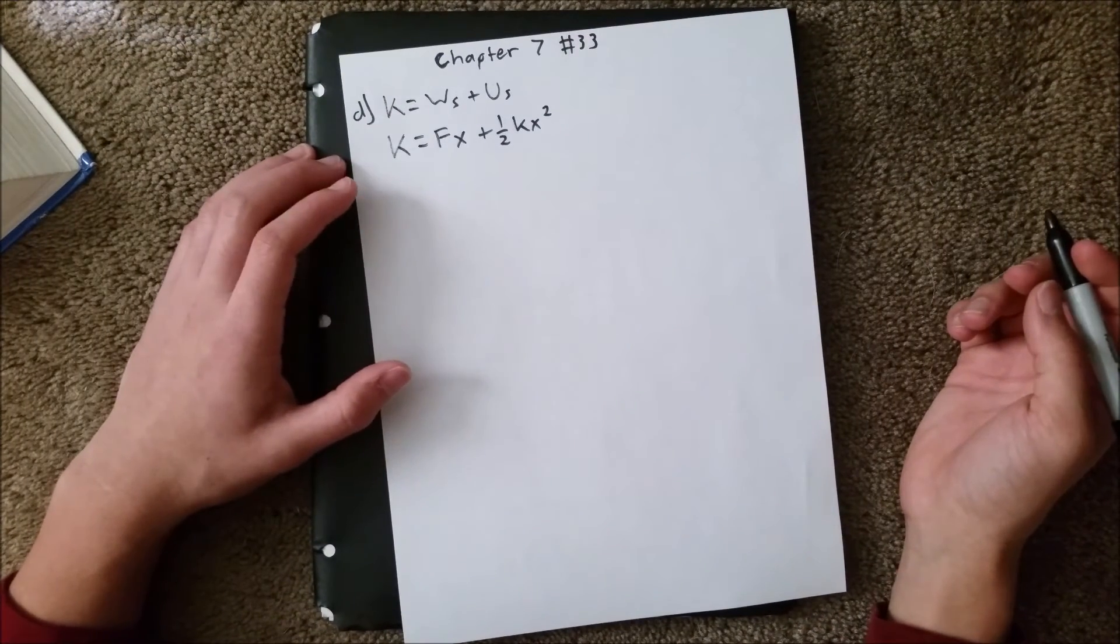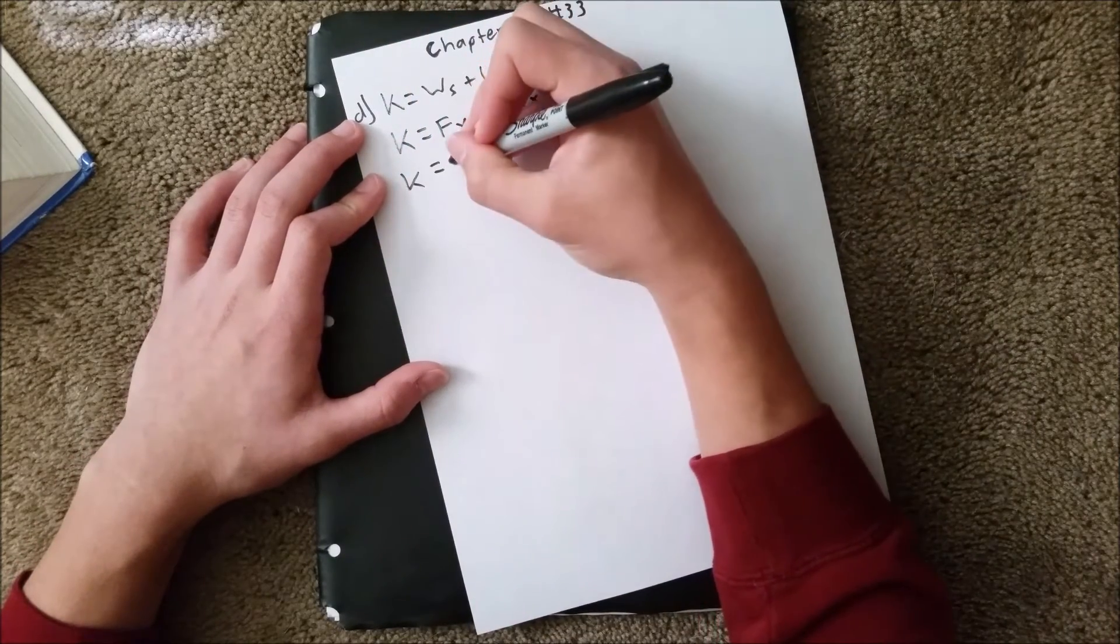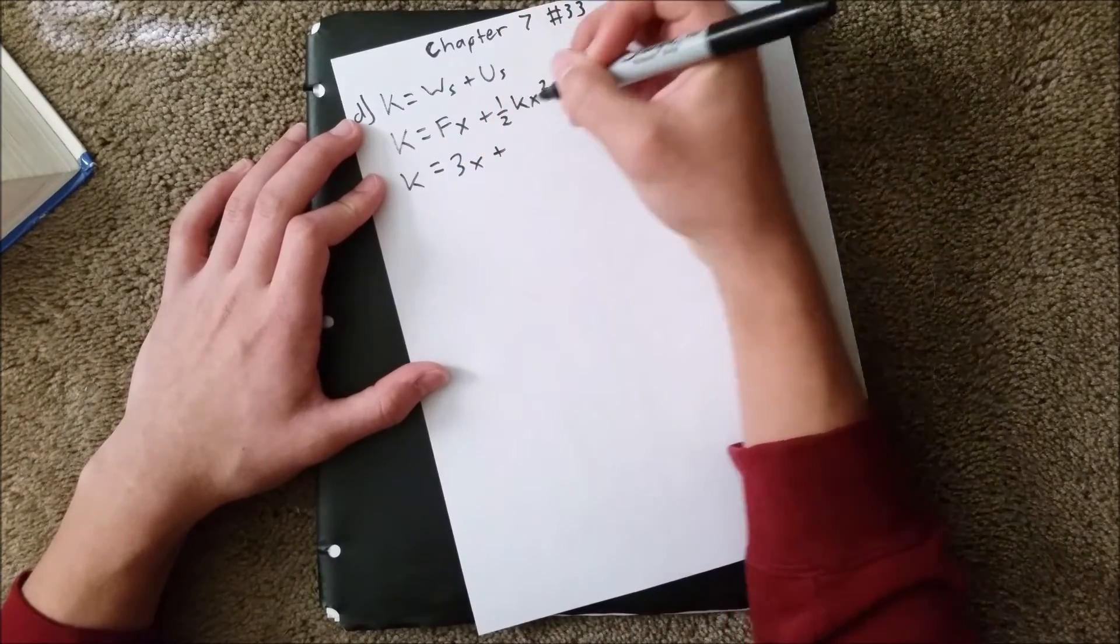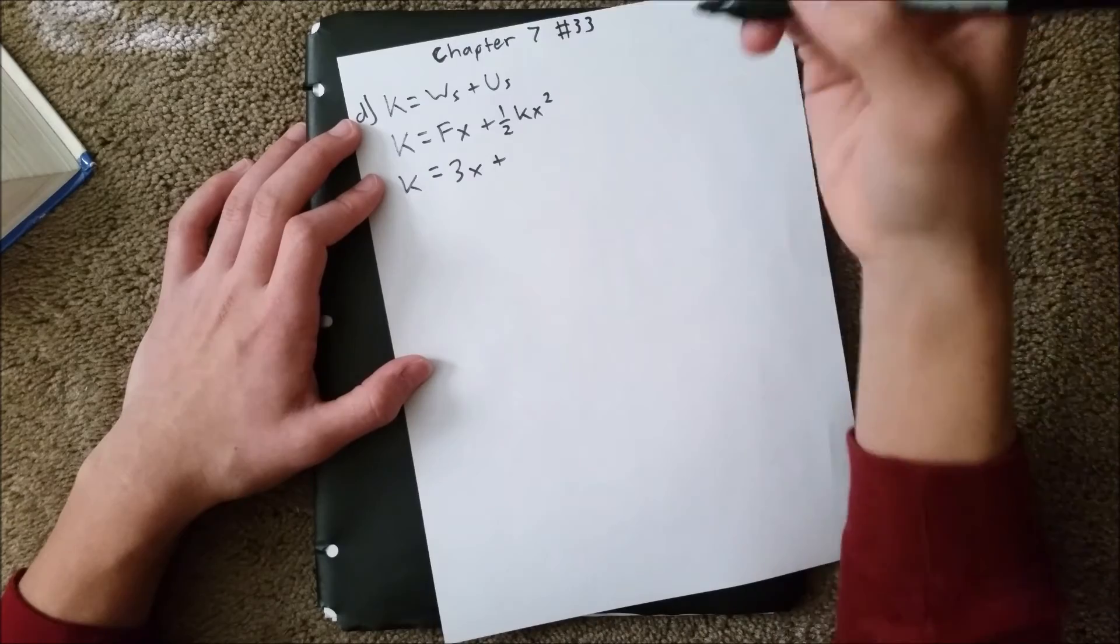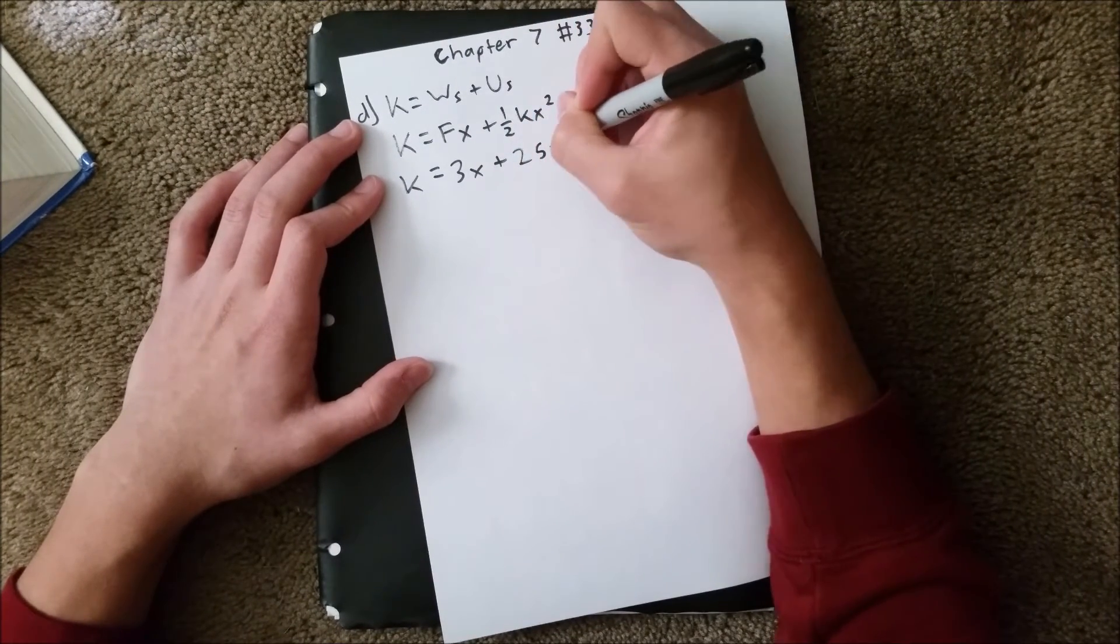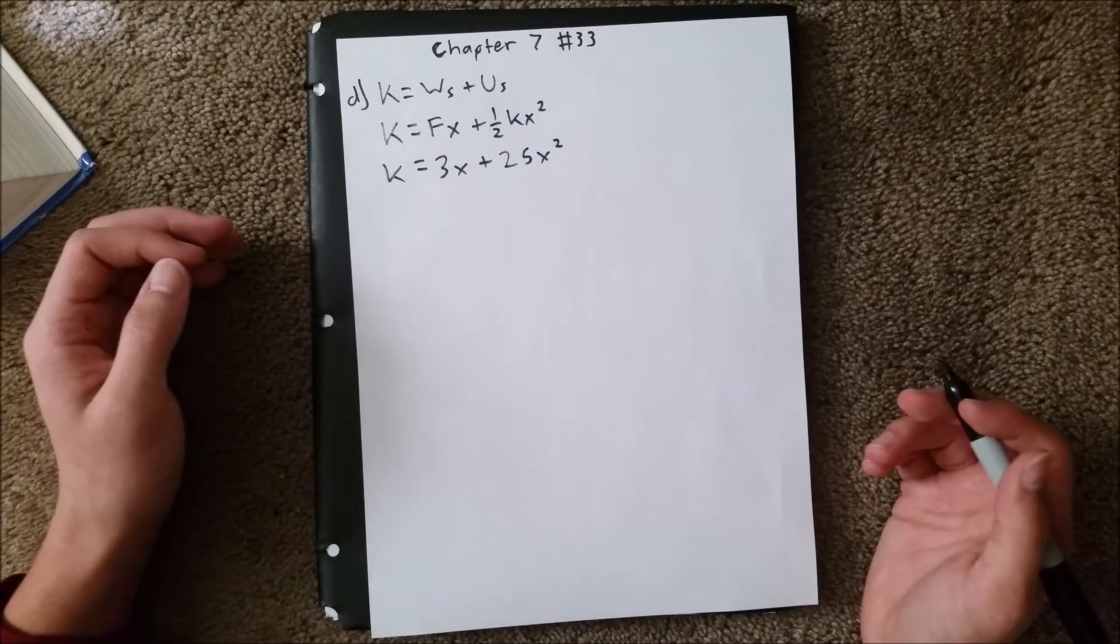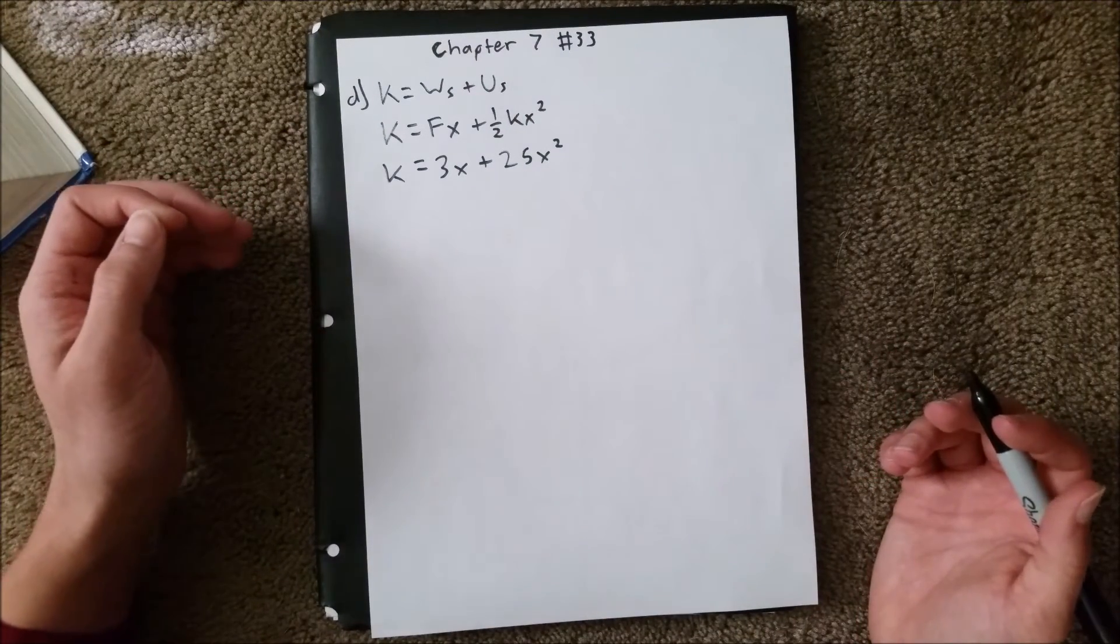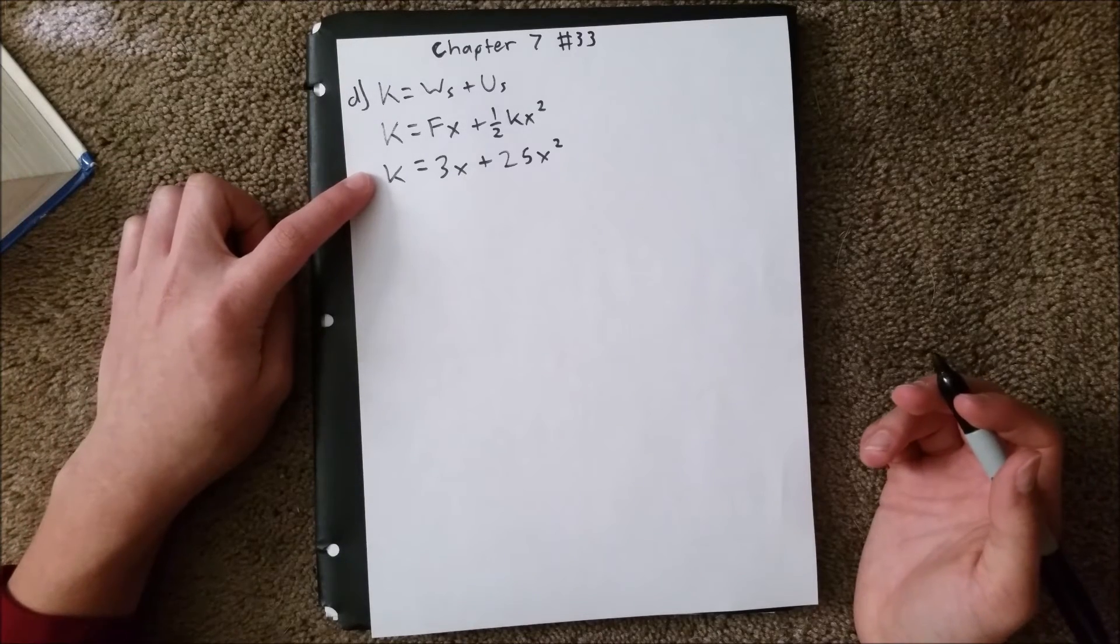We can plug in the values we know. K equals, the force is given as 3, plus, and we know the spring constant is 50. 50 times 1 half is 25, so 25x squared. Since we're looking for kinetic energy as a maximum, we need to take the derivative of this equation and set it equal to 0.